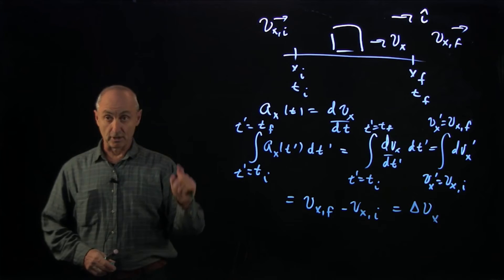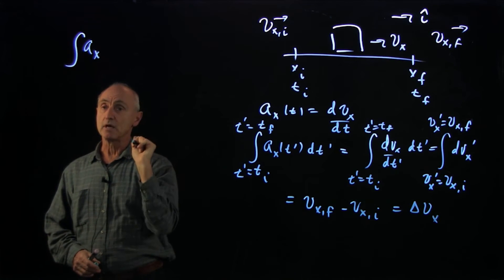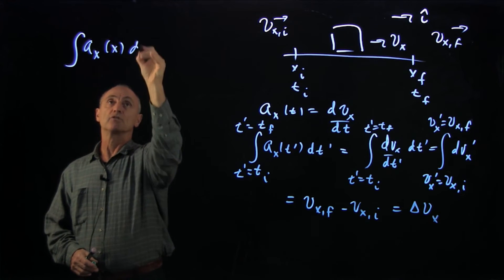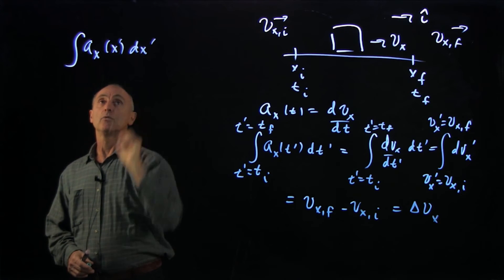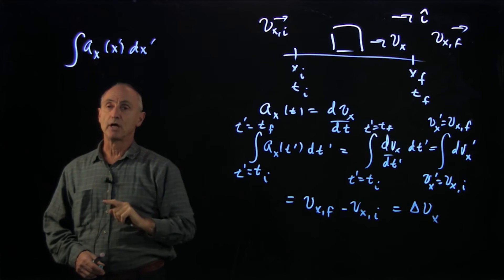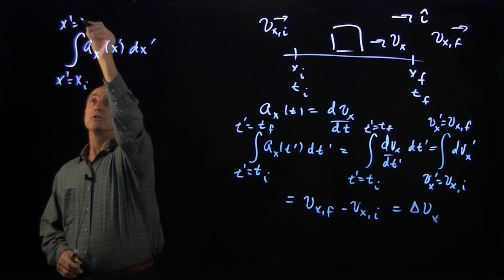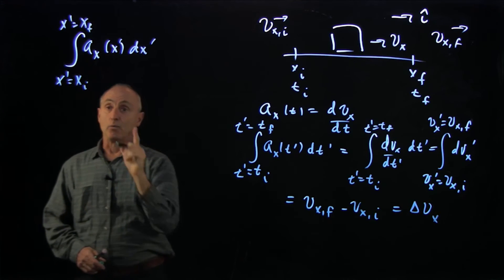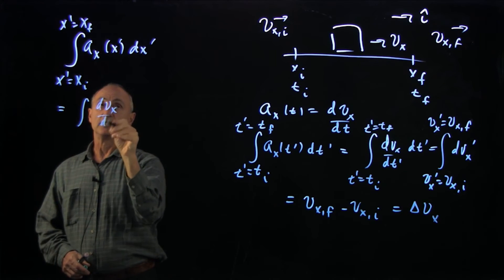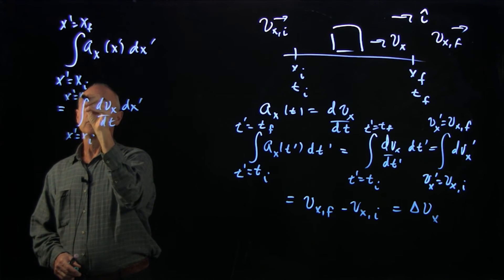Now, let's see what happens as a comparison when we integrate our acceleration, not with respect to time, but suppose that it's a function of space. And so now we're integrating. Again, we have a dummy variable. We have to be careful because this is the x component of acceleration, but x prime is our integration variable, and that's going from some initial position to some final position. Now we can write this as, again, make the substitution dvx/dt dx prime, going from the initial to the final.